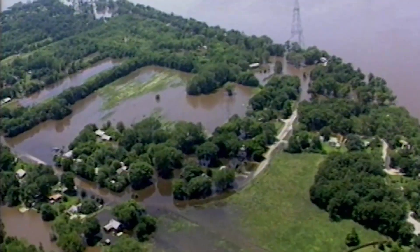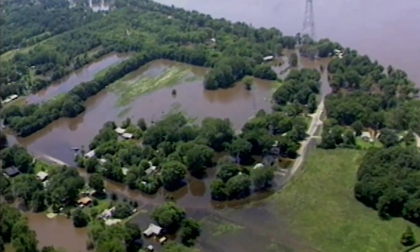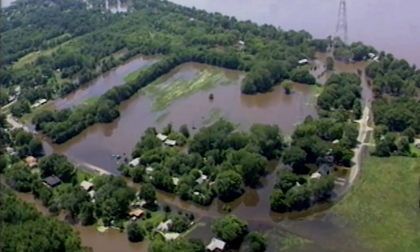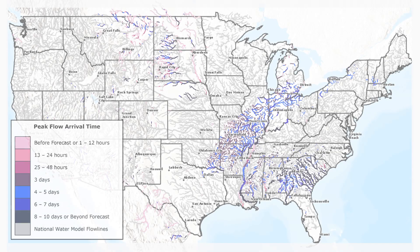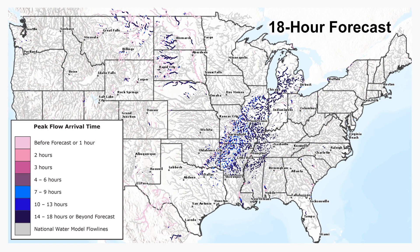Arrival of the peak flow during an event is vital for timely actions regarding the worst expected conditions. This service provides visualizations of the medium-range forecast covering 10 days and the short-range forecast covering 18 hours.